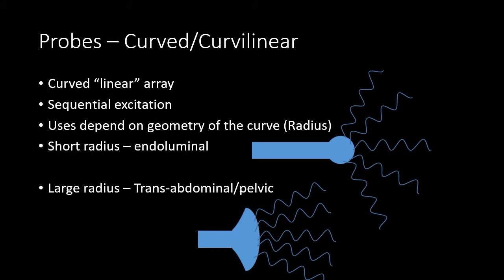The curved probe, sometimes referred to as a curved linear probe, is truly a linear array oriented along a particular radius, with sequential excitation of the piezoelectric crystals. Unlike a linear array with a flat transducer surface, the curved probe has a particular radius. The geometry of our image will depend on that radius. Short radius probes — such as endoluminal or transvaginal probes — provide a very wide field of view from a smaller probe. A traditional large radius curved array is used for transabdominal and pelvic imaging, generating a wide field of view with more rectilinear geometry.